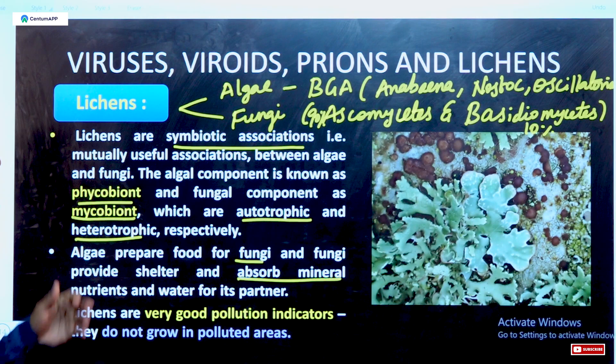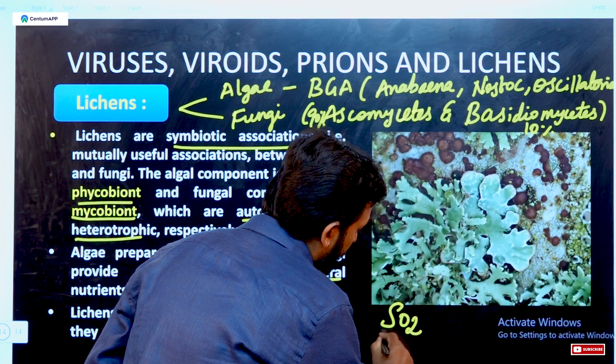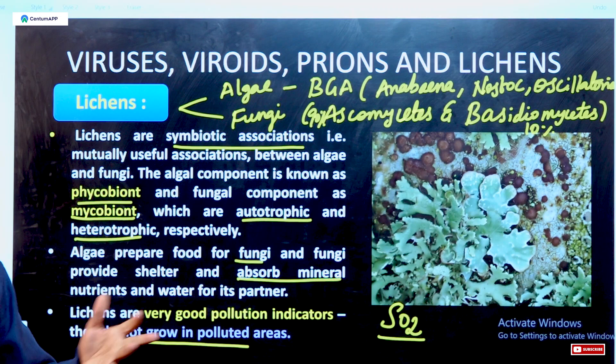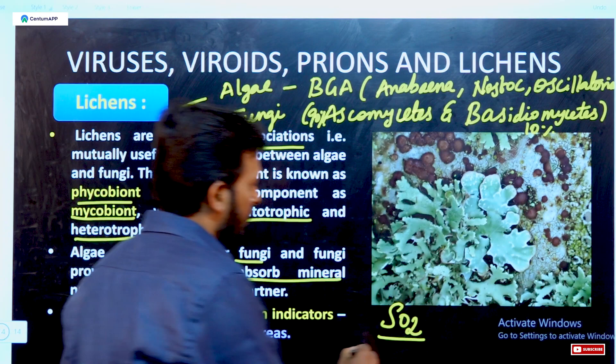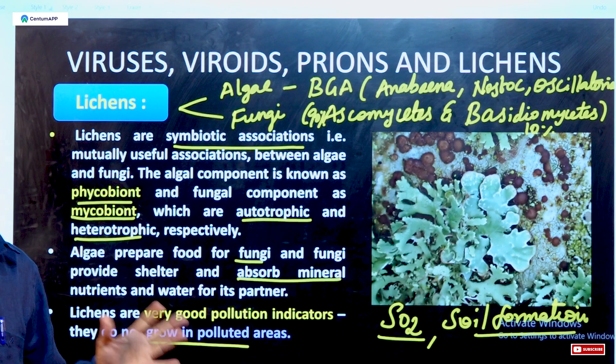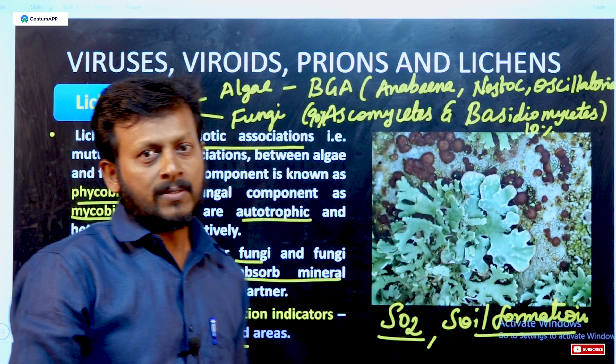Lichens are very good pollution indicators because they do not grow in polluted areas where sulphur dioxide is present. Lichens also contribute to soil formation in rocky areas. These are all the good examples for Lichens. In our next video, we will discuss the Plant Kingdom. Thank you, students.